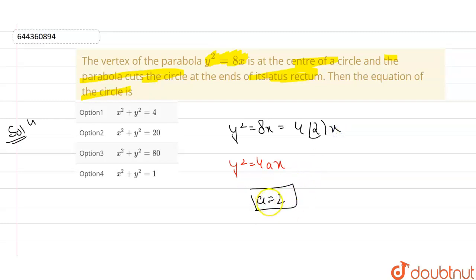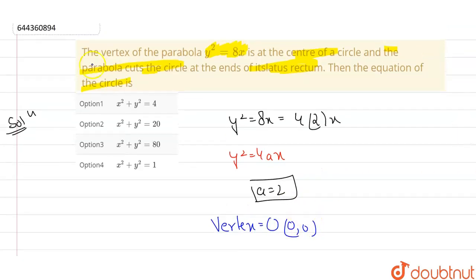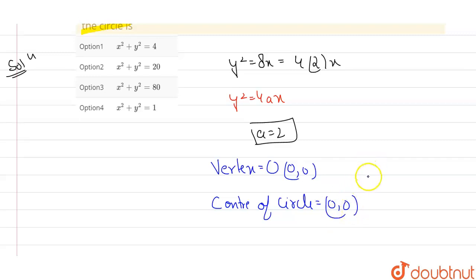This parabola has its vertex at (0, 0). The question says the vertex of the parabola is at the center of the circle, which means the center of the circle is also (0, 0).